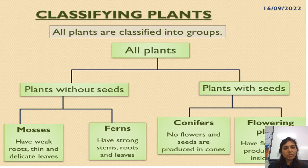These plants here are called mosses. They have weak roots and thin, delicate leaves, so they're quite fragile in structure.